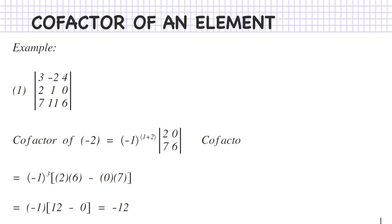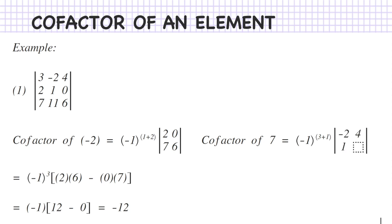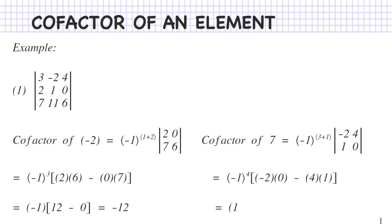For the determinant 3, minus 2, 4, 2, 1, 0, 7, 11, 6: the cofactor of minus 2 (row 1, column 2) is (minus 1)^(1+2) times the minor of minus 2, which is the determinant of 2, 0, 7, 6. This gives minus 1 times (2 times 6 minus 0 times 7), equals minus 1 times 12, giving minus 12. For the cofactor of 7 (row 3, column 1): (minus 1)^(3+1) times the minor of 7, which is the determinant of minus 2, 4, 1, 0. This gives plus 1 times (minus 2 times 0 minus 4 times 1), equals minus 4. So the cofactor of 7 is minus 4.